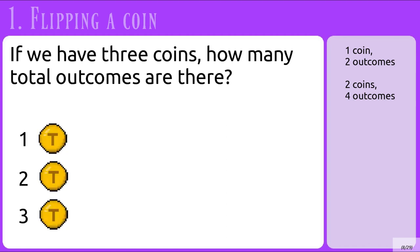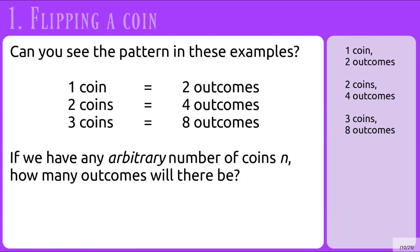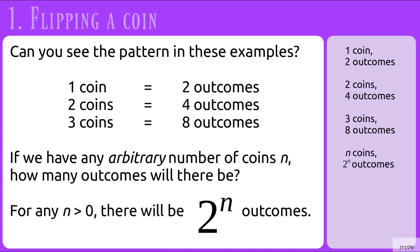And if we have three coins, how many total outcomes will there be? There will be eight total possible outcomes. There's all heads and all tails, of course, but then we also need to have all possible combinations in between. Can you see the pattern in these examples? If we have any arbitrary number of coins n, how many outcomes will there be? There will be two to the n outcomes, given that we are flipping n amount of coins.